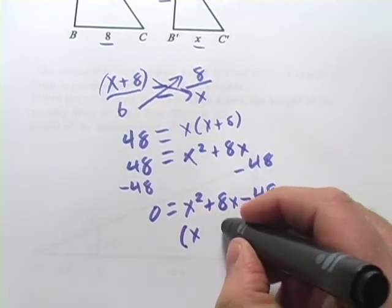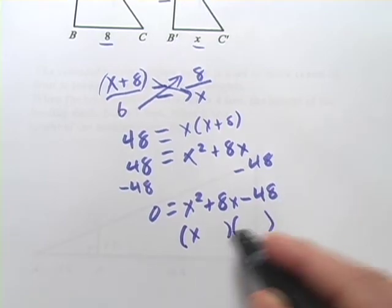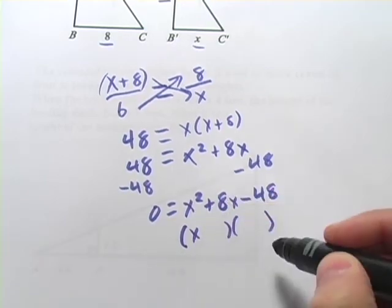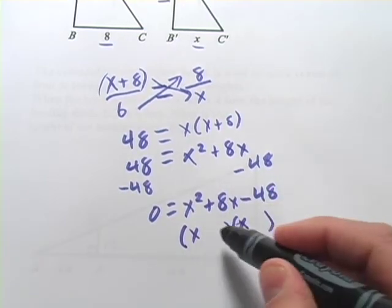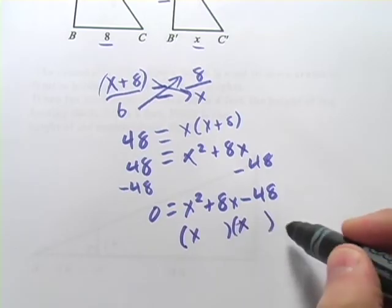When you factor, you have these two things that would foil together to create this. So you're going to have X plus or minus some number and X plus or minus some number.